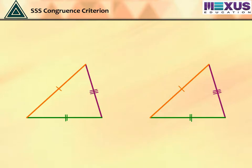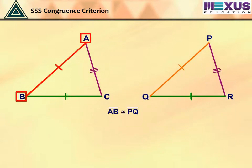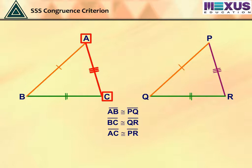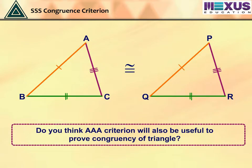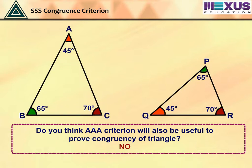For given triangle ABC and triangle PQR, we see that side AB is equal to PQ, side BC is equal to side QR, and side AC is equal to side PR. Hence, by SSS criterion, triangle ABC is said to be congruent to PQR. Do you think the AAA criterion will also be useful to prove congruency of a triangle? No. If all angles of one triangle are equal to another, it is not necessary that their sides will also be equal. Therefore, there is no such AAA criterion to prove congruence.